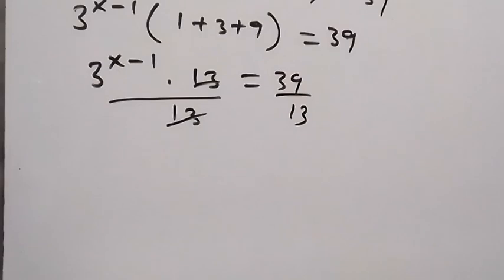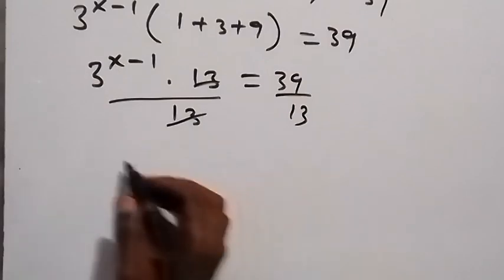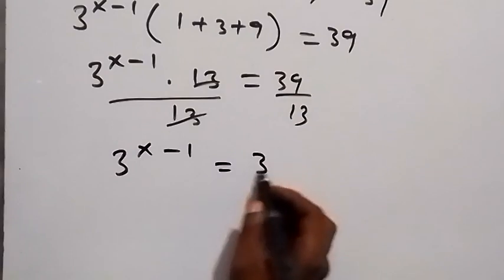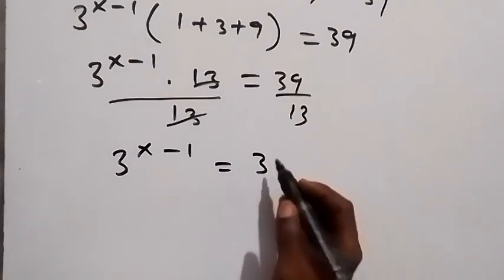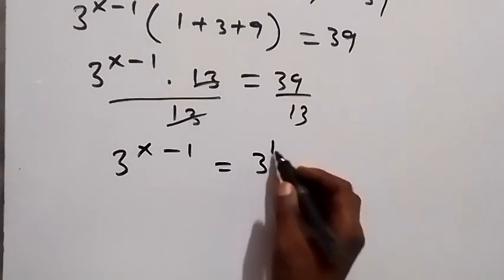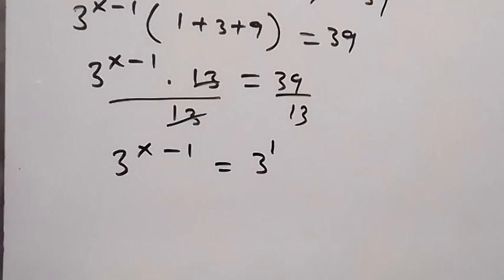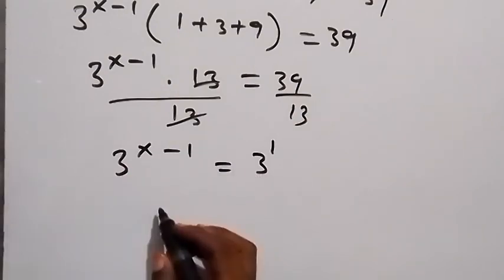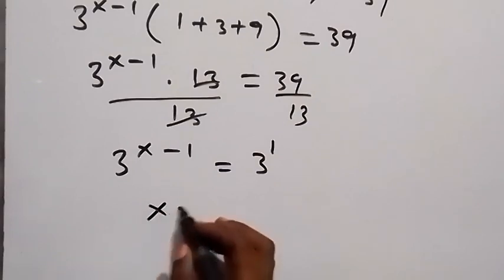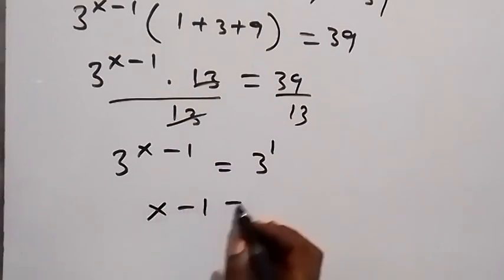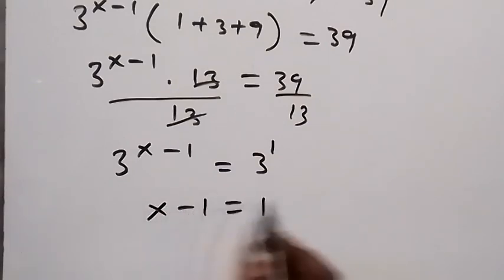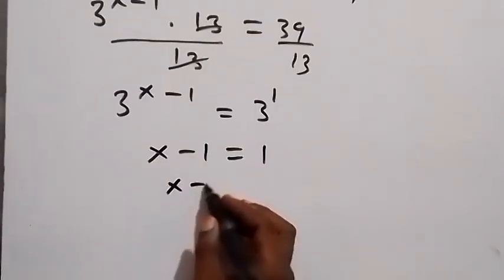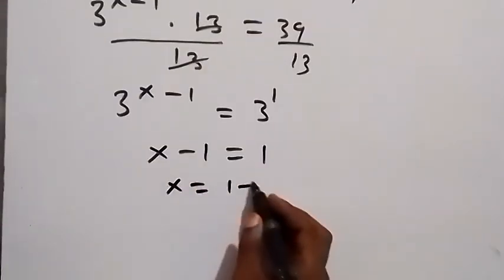So 3 raised to power x minus 1 equals 3 raised to power 1. Since the bases are the same, we can equate the powers. This gives x minus 1 equals 1, so taking minus 1 to the other side it becomes plus 1, giving us x equals 1 plus 1, therefore x equals 2.